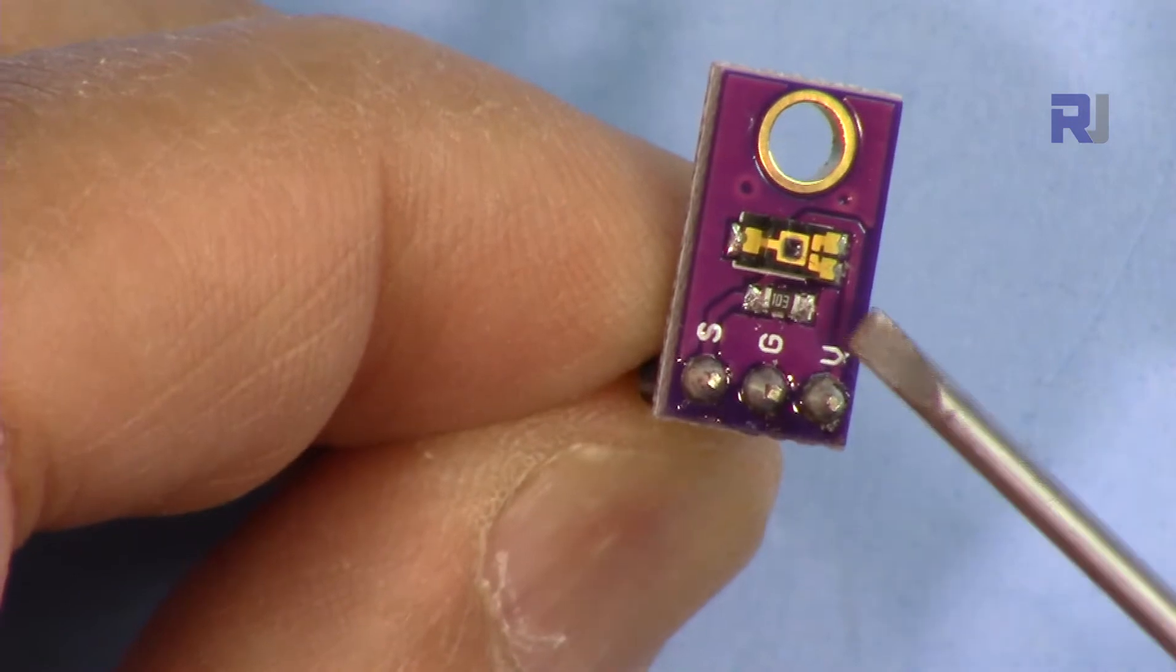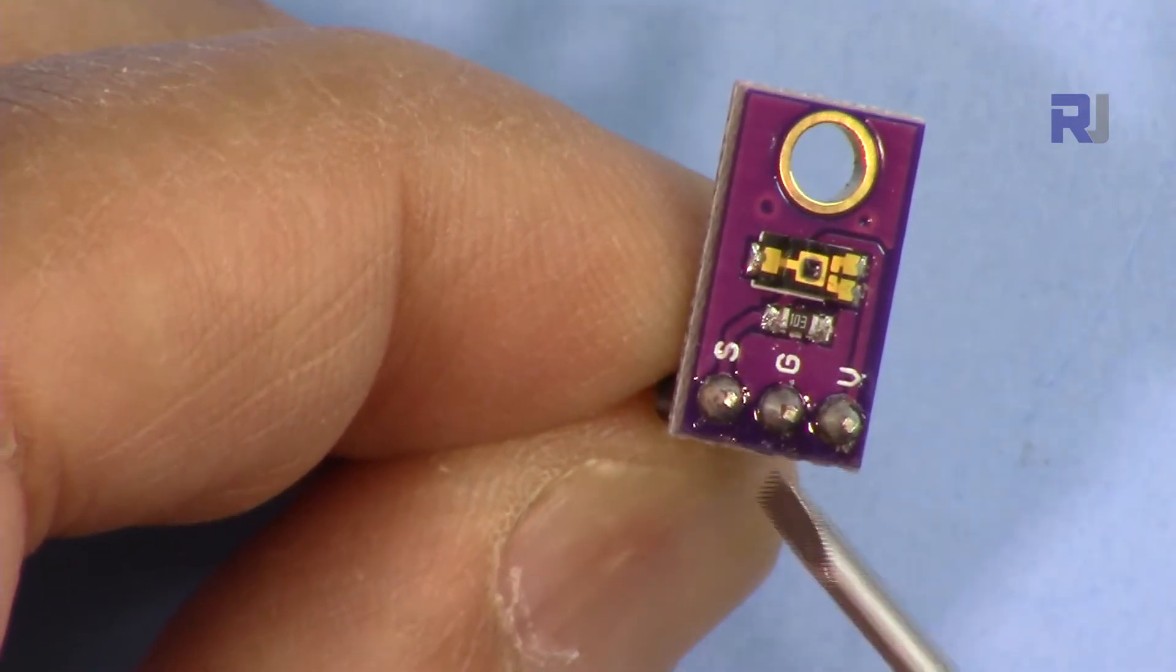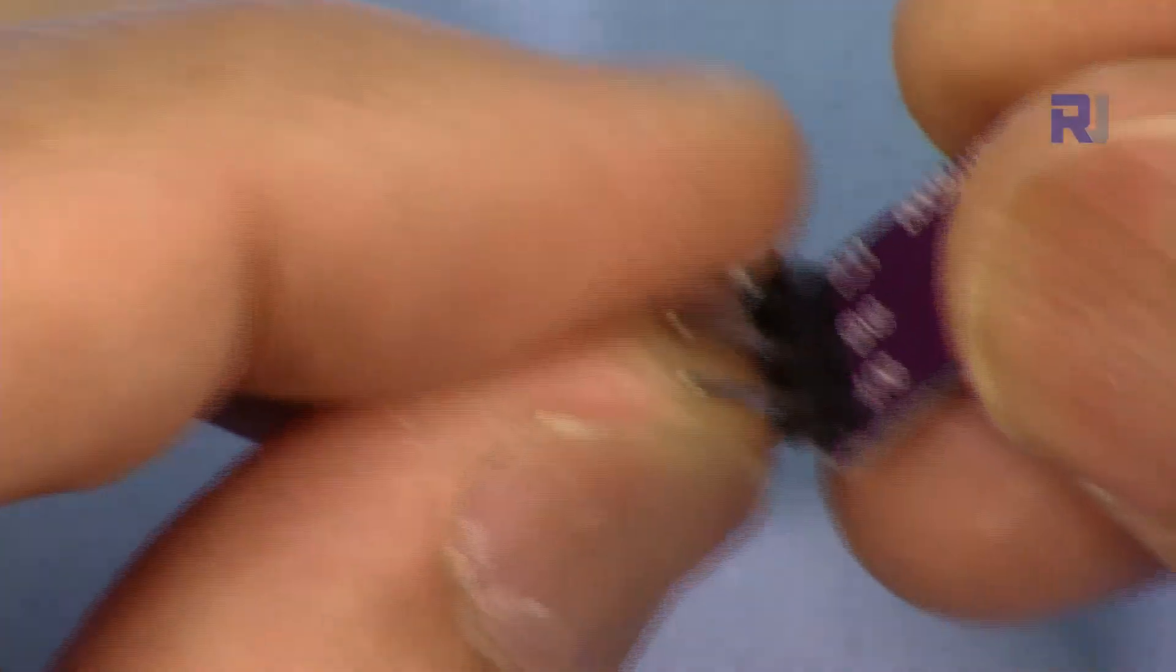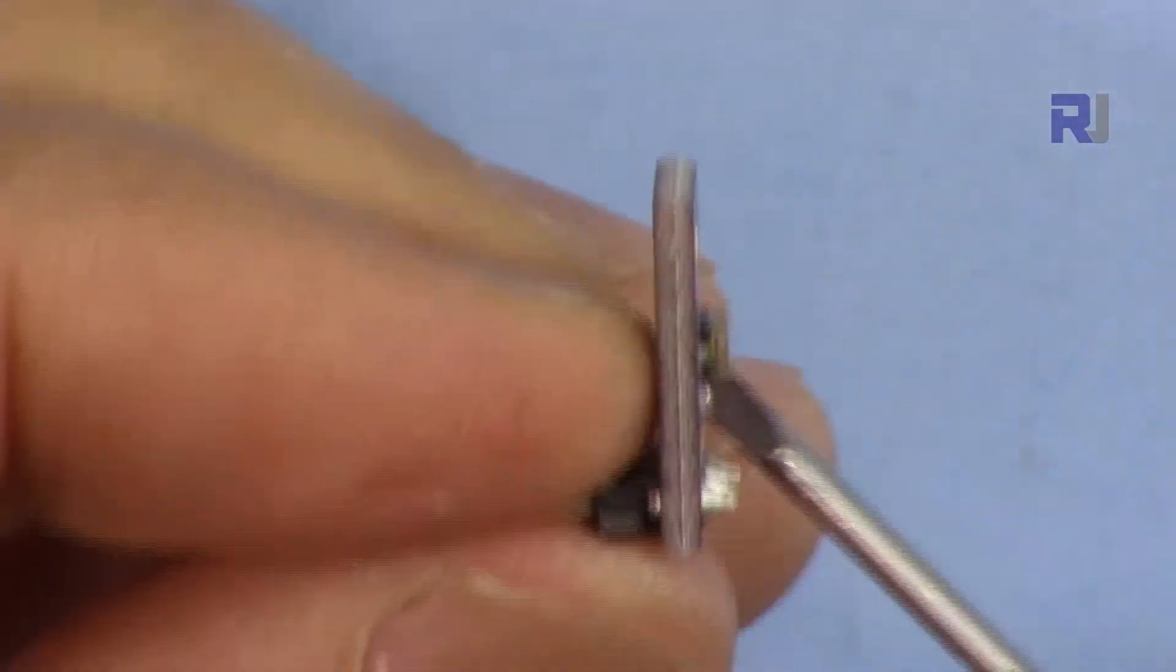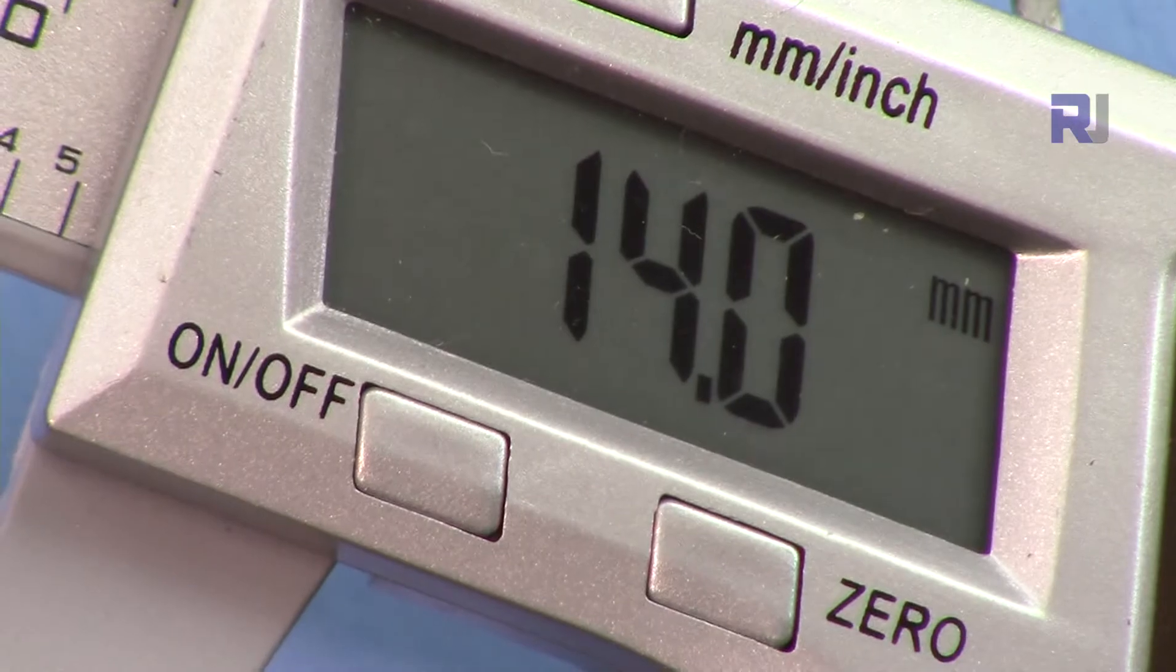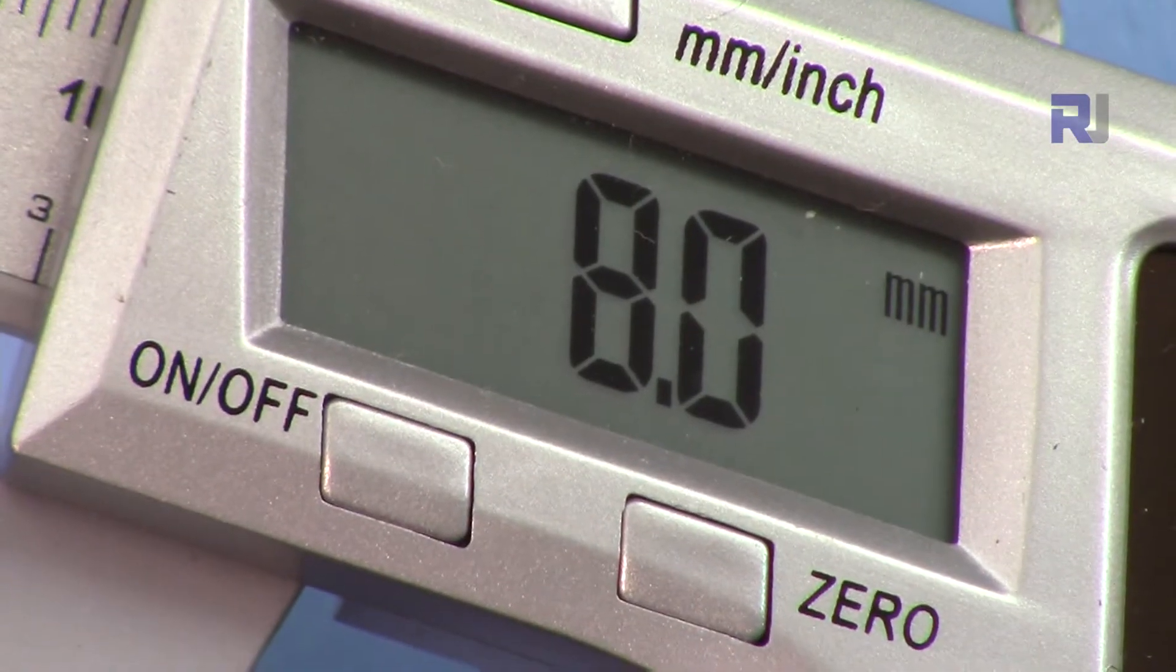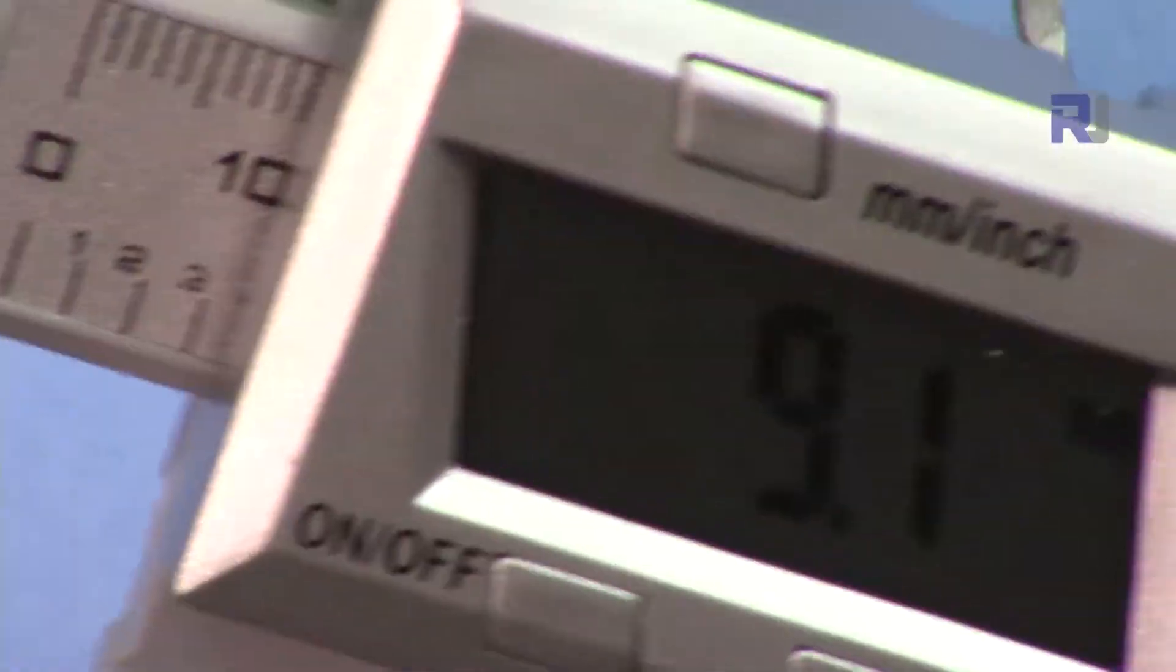This is the actual TEMT6000 photo transistor. We have three pins and other than that there is nothing else. I've soldered it in this way so my wires will be here and this will be exposed openly, but if you need to connect it from the other side, that's also fine. 14 millimeter is the length, the width is 8 millimeters, the depth is 2.7 millimeters, and it weighs less than a gram.